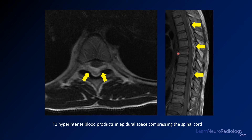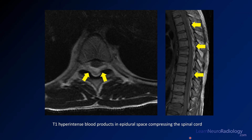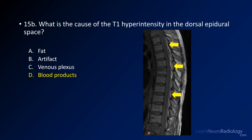You also see the fractures. Many times you'll already have CT on these patients, so you may know there are fractures. You see at least two compression fractures here, possibly more, and that's what's leading to blood collecting in the spinal canal.